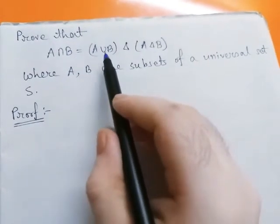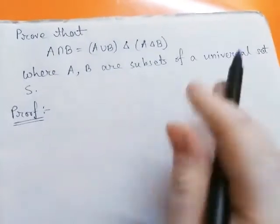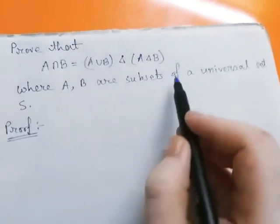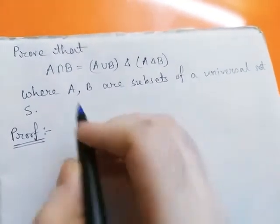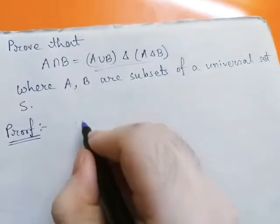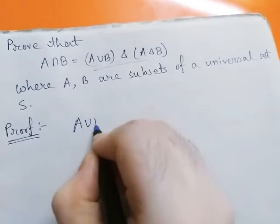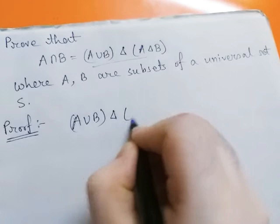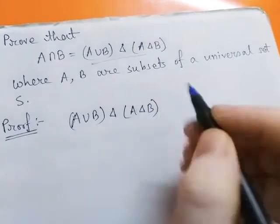Prove that A intersection B equals A union B delta A delta B, where A and B are subsets of universal set S. Now we start with the right-hand side: A union B delta A delta B.